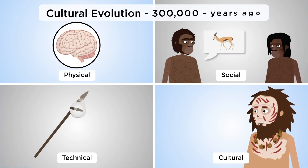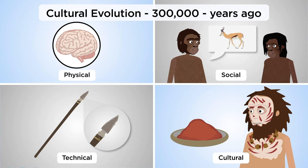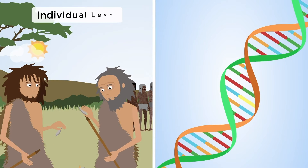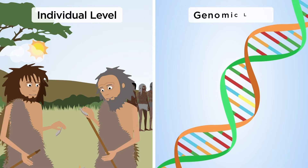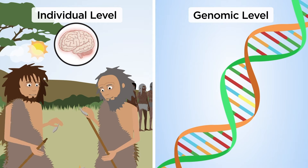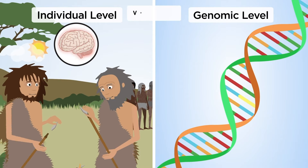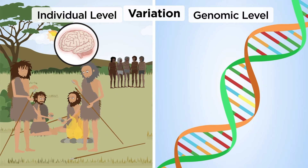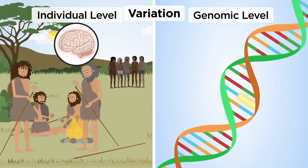Cultural evolution involves learning from other people. Cultural evolution happens at both the individual and the genomic level. This dual inheritance expands cooperation. In cultural evolution, skills are socially learnt, and mutations may enhance learning ability.